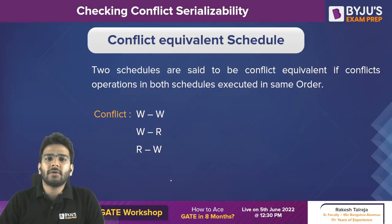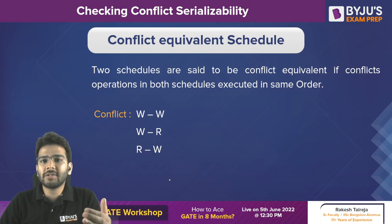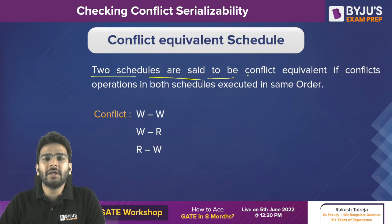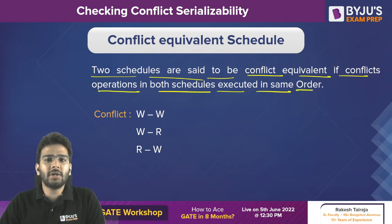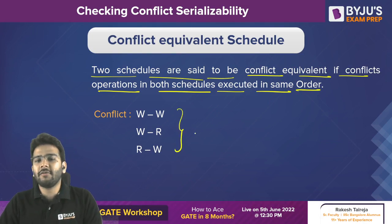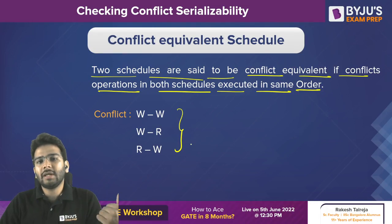Let's start our topic — conflict. Before understanding what is conflict serializability, we need to understand what is a conflict equivalent schedule. Two schedules are said to be conflict equivalent if conflict operations in both schedules are executed in the same order. So what is a conflict? We have three types of conflicts when we have transactions like T1, T2, T3 going on.